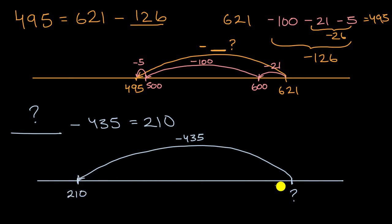So to figure out blank, we could go the other way around. We could start at 210 and then just add 435. So what's 210 plus 435? Well, there's many ways of doing it, but I encourage you to pause this video and see if you can work that out.